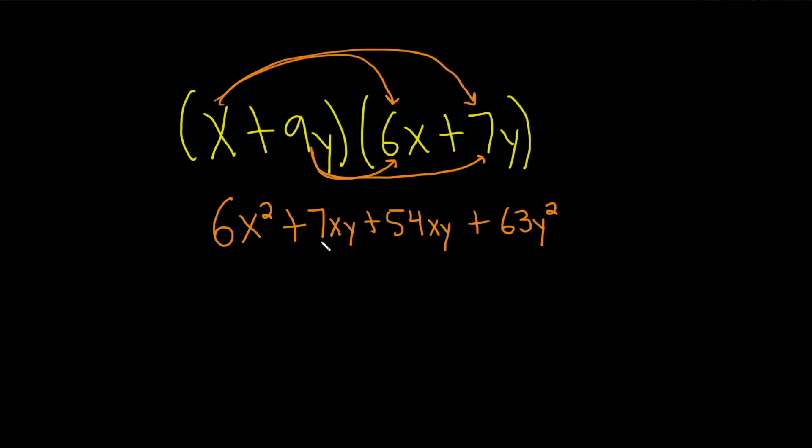We're almost done. We just have to combine these two middle terms. So we have 6x squared. 7 plus 54 is 61, so we have plus 61xy, plus, and then we're left with 63y squared. And that would be the final product.